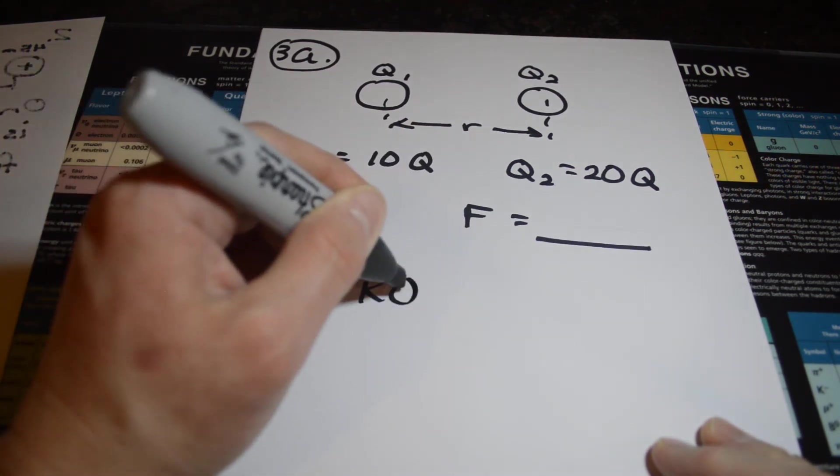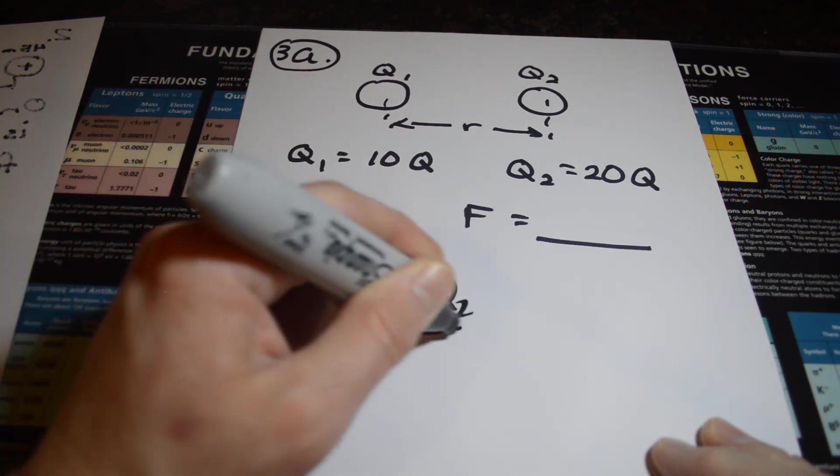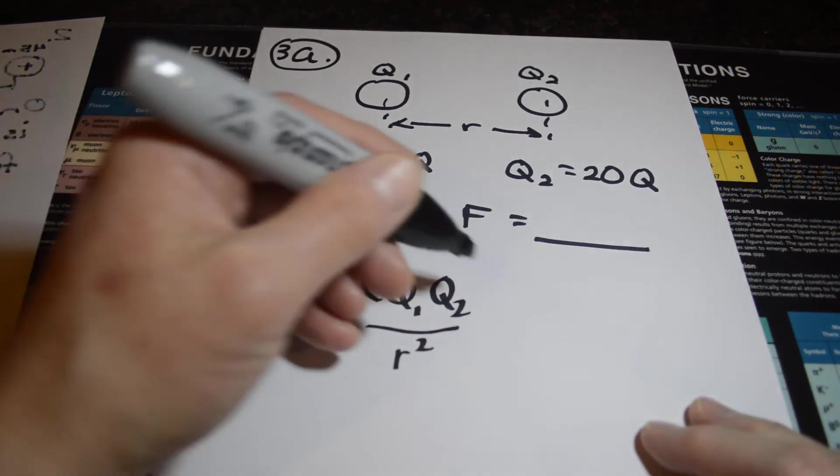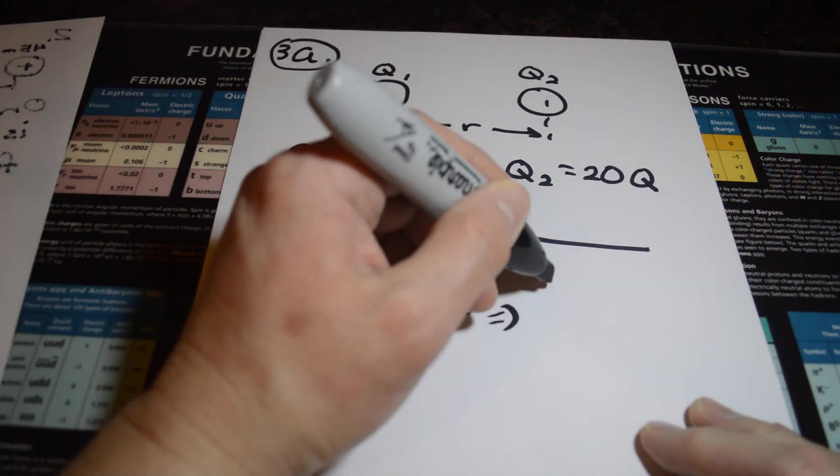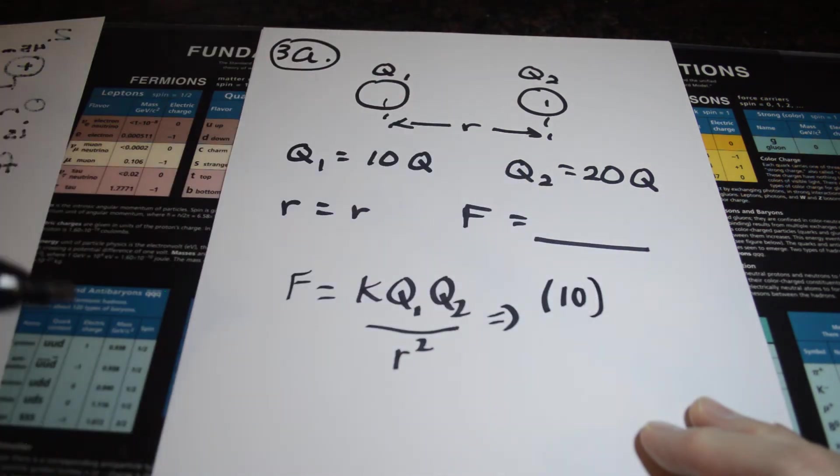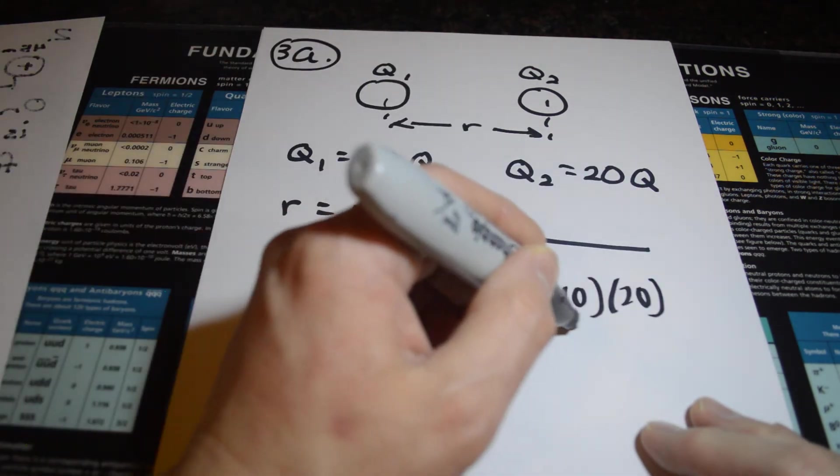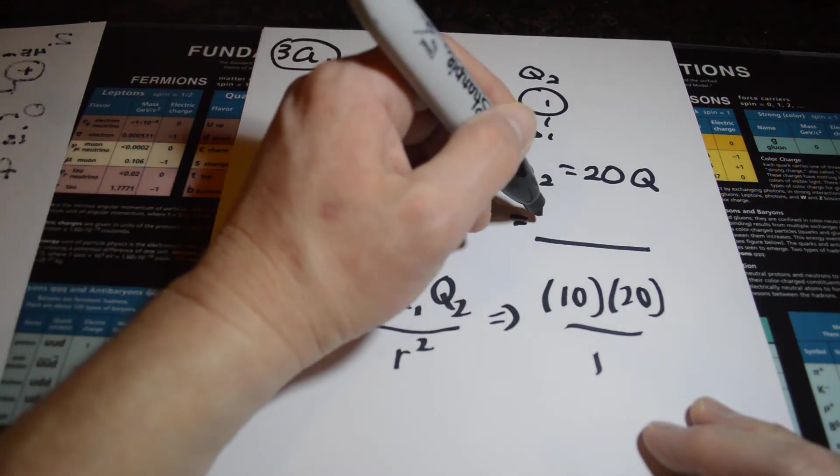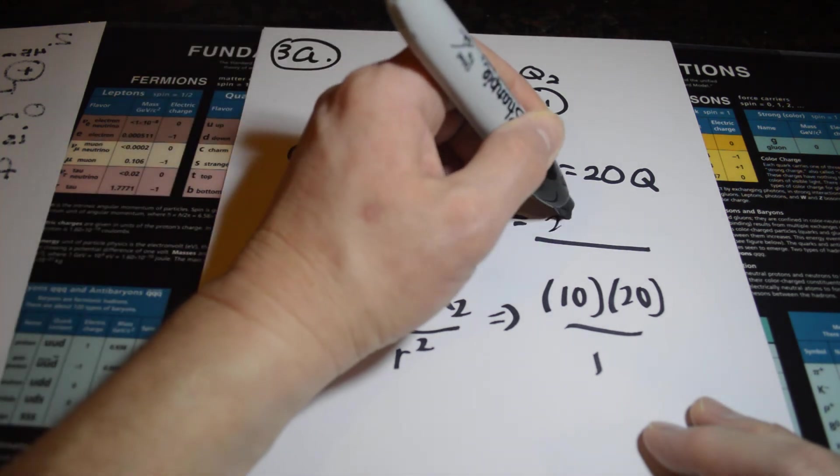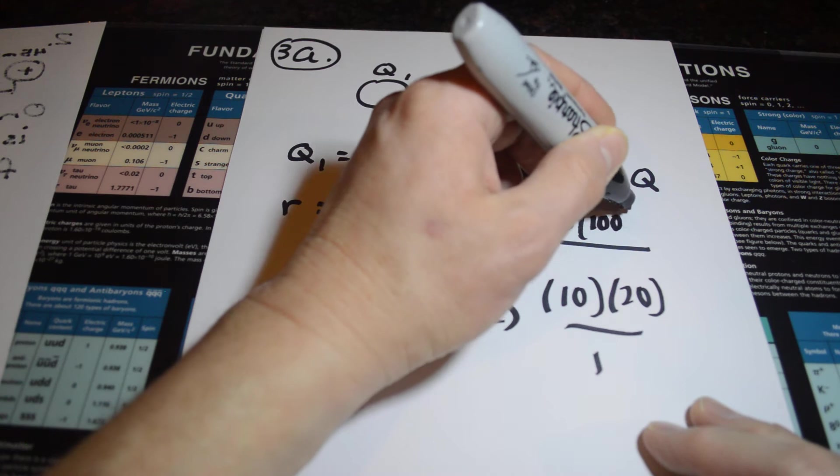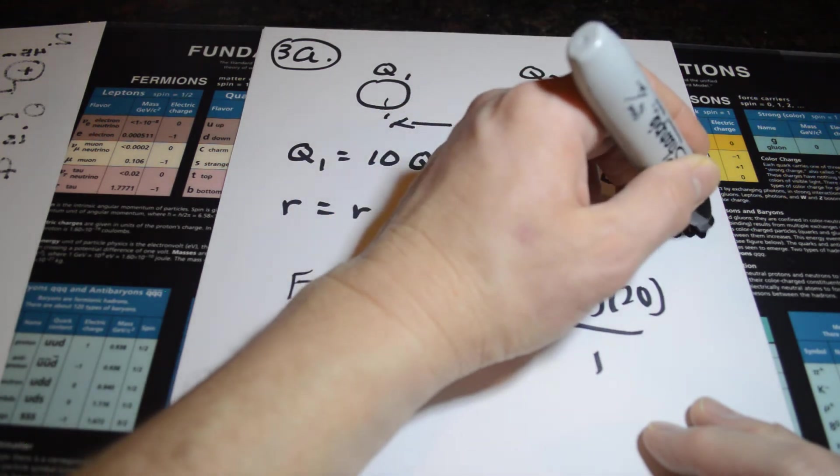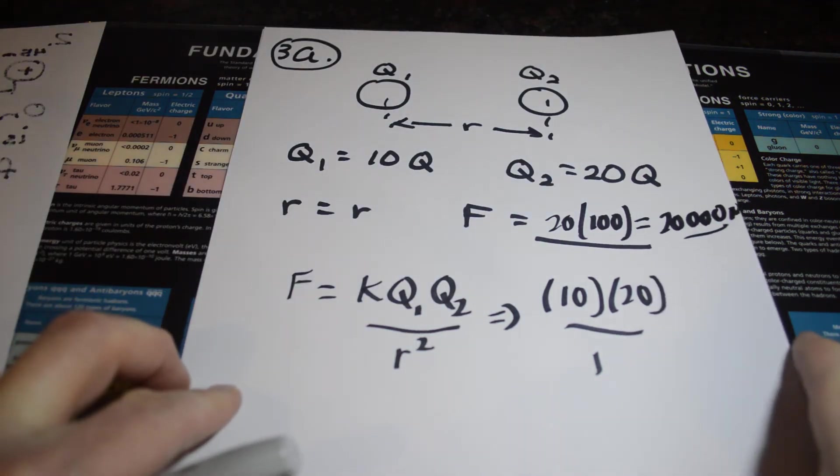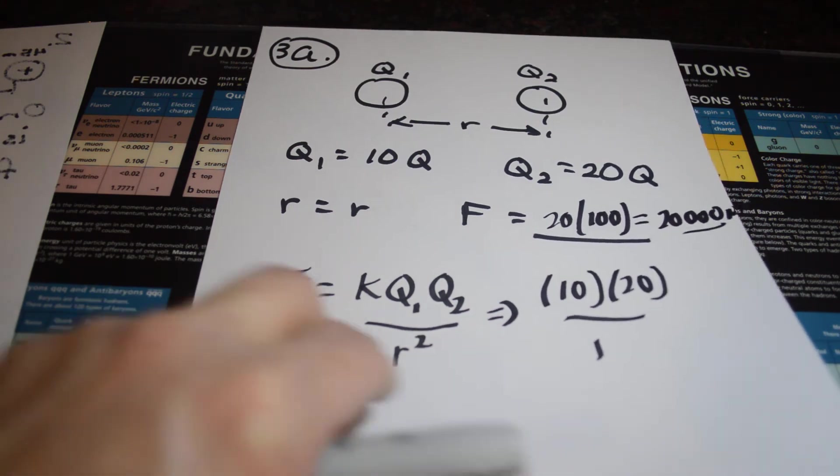Remember that Coulomb's Law, again, we said that on one of the other pages, is Q1 times Q2 times the constant K over R squared. If we look at just proportions, the first charge is 10 times as much, and the second charge is 20 times as much, and the distance stays the same. So effectively, that's a 1. So wouldn't it be true that your force, which was 100 Newtons, is now 20 times 100, which is 20,000 Newtons? So I think that's the answer to letter A, is you get a force of 20,000 Newtons, just by knowing what happened in the first case.